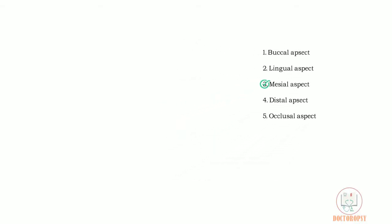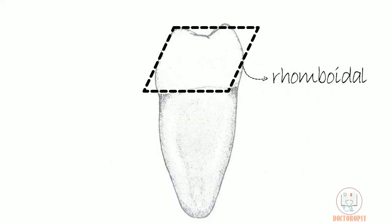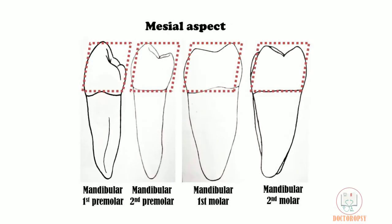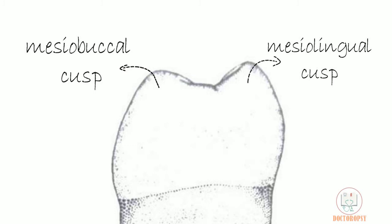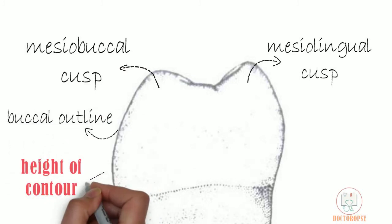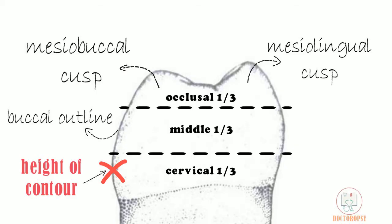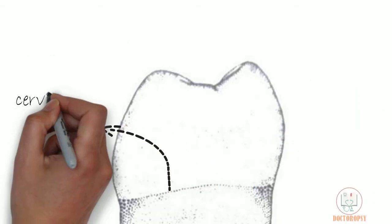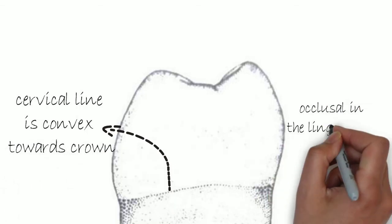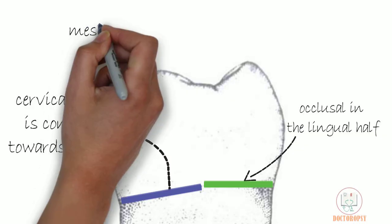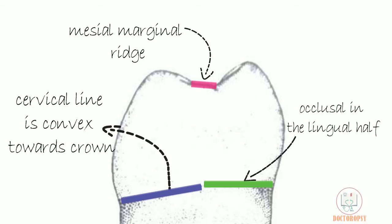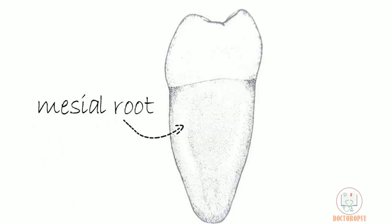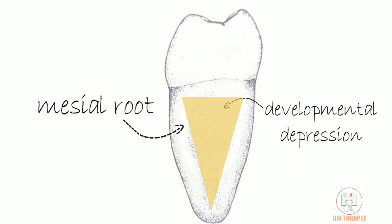Next, the mesial aspect. The outline form of the crown from the mesial aspect is rhomboidal, in continuation with all mandibular posterior teeth which have a lingual tilt. Two cusps are visible: the mesiobuccal cusp and the mesiolingual cusp. The buccal outline is convex with its height of contour at the cervical third due to the cervical ridge, and the lingual outline is convex with its height of contour in the middle of the middle third. The cervical line is convex towards the crown and slightly more occlusal in the lingual half than the buccal half. The mesial marginal ridge is confluent with the cuspal ridges of the mesial cusps. Only the mesial root is visible from this aspect, which is smooth and tapering towards the apex, with a developmental depression running along the long axis of the tooth.